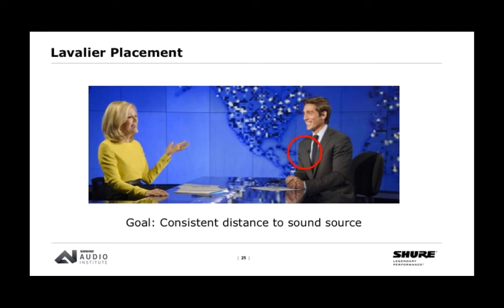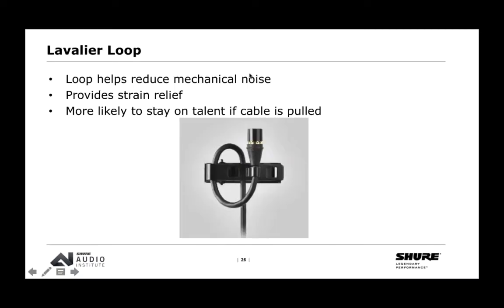The ultimate goal is consistent distance to the sound source. A good practice is the lavalier loop: put a loop on the clip itself with the cable. The loop helps reduce mechanical noise and clothing noise brushing on the microphone, and provides strain relief — if the cable gets tugged, it's more likely to stay on the clip rather than the microphone falling out. Most clips have two square holes, allowing you to double-mic someone on the same clip as a backup in case one lavalier fails.